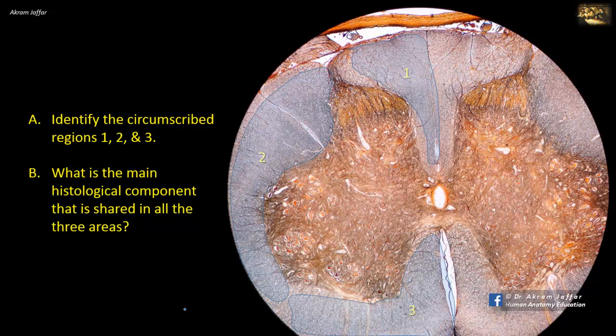These are white matter regions that surround the core of gray matter in the spinal cord. They are the dorsal or posterior funiculus (1), the lateral funiculus (2), and the anterior funiculus (3). They are named according to their relative positions in the spinal cord. In some classifications, the anterior and lateral funiculi are considered to be a single anterolateral funiculus.